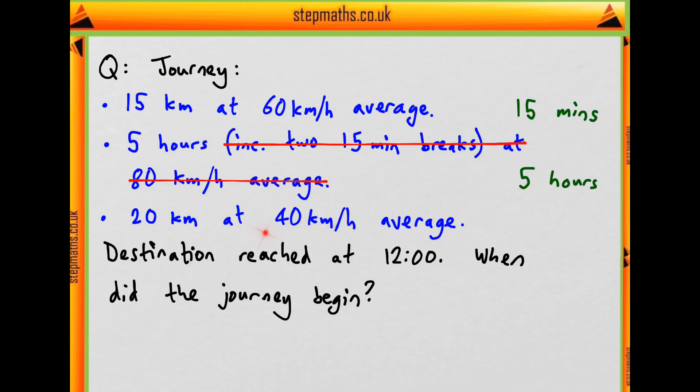Then if you do a similar thing for this third stage, if you're going at 40 average and it takes an hour to go 40km, then how long will it take to go 20? Well, 20 is half of 40, so it's going to take half an hour or 30 minutes.